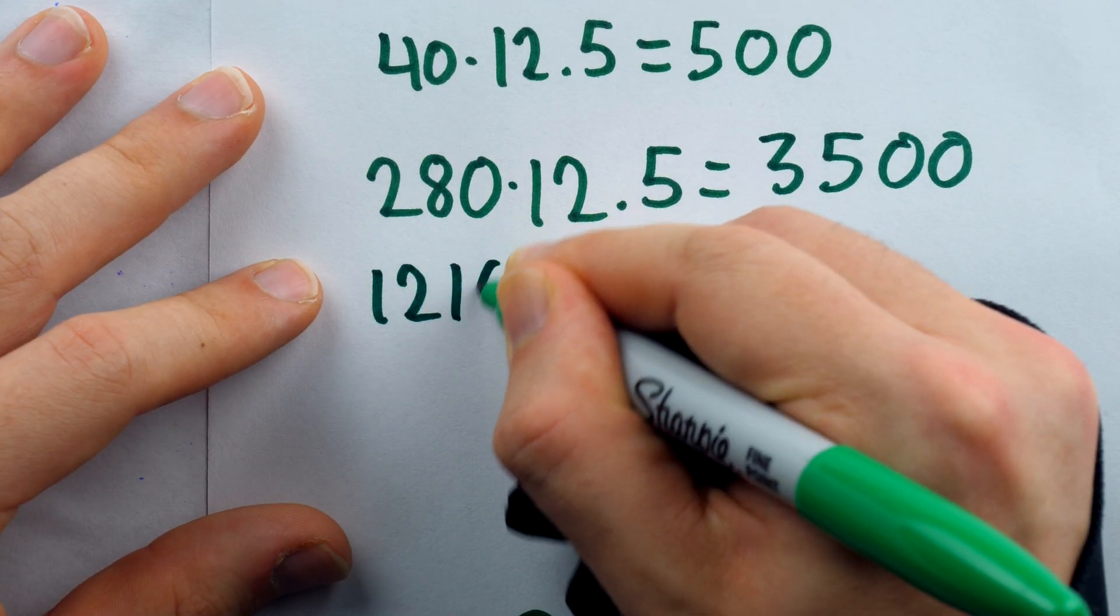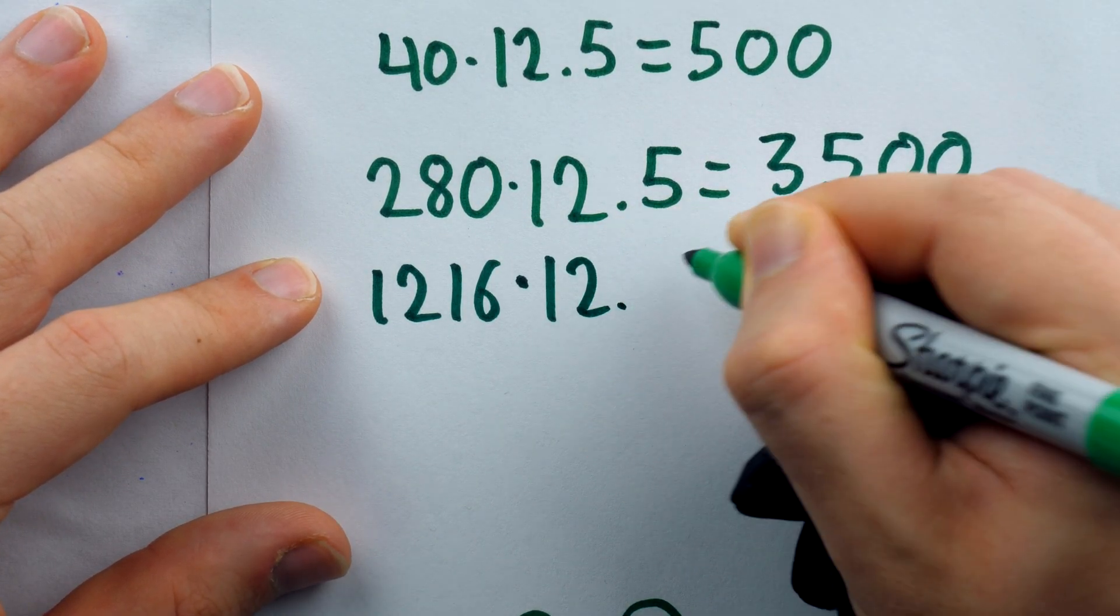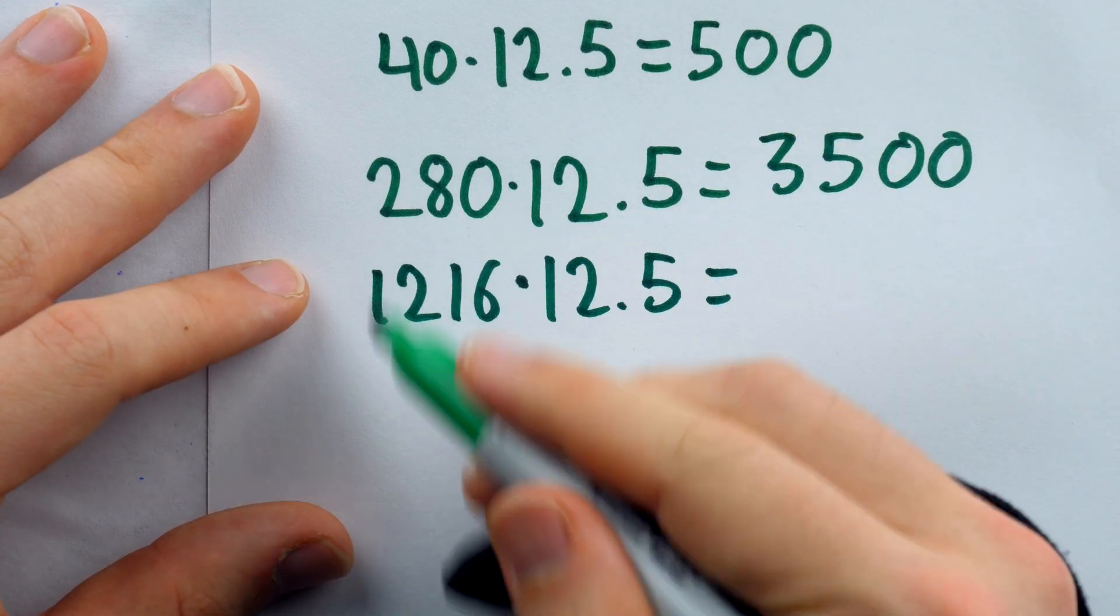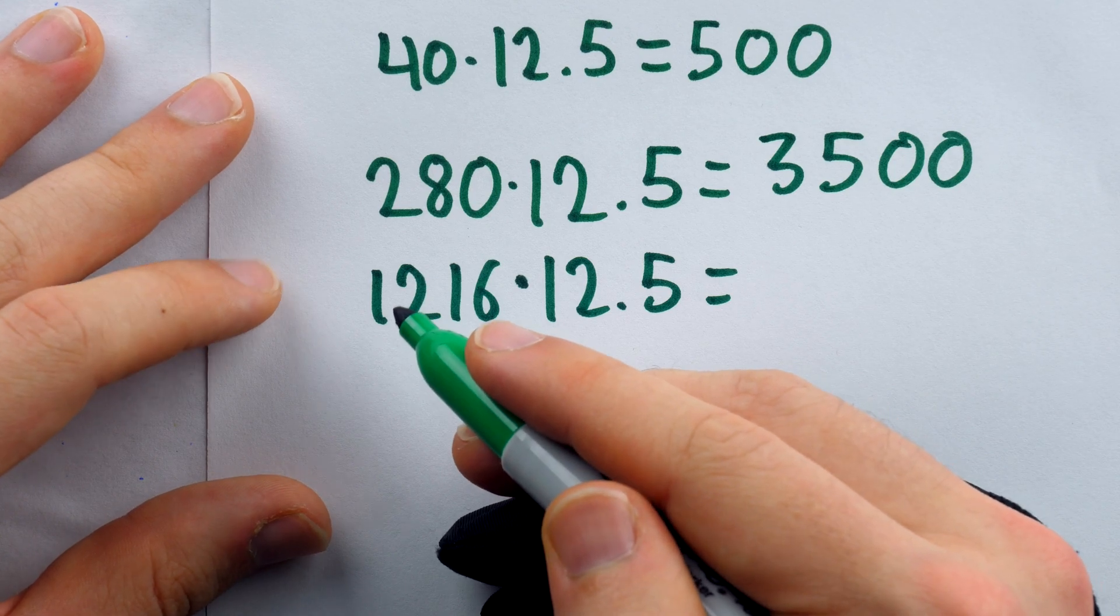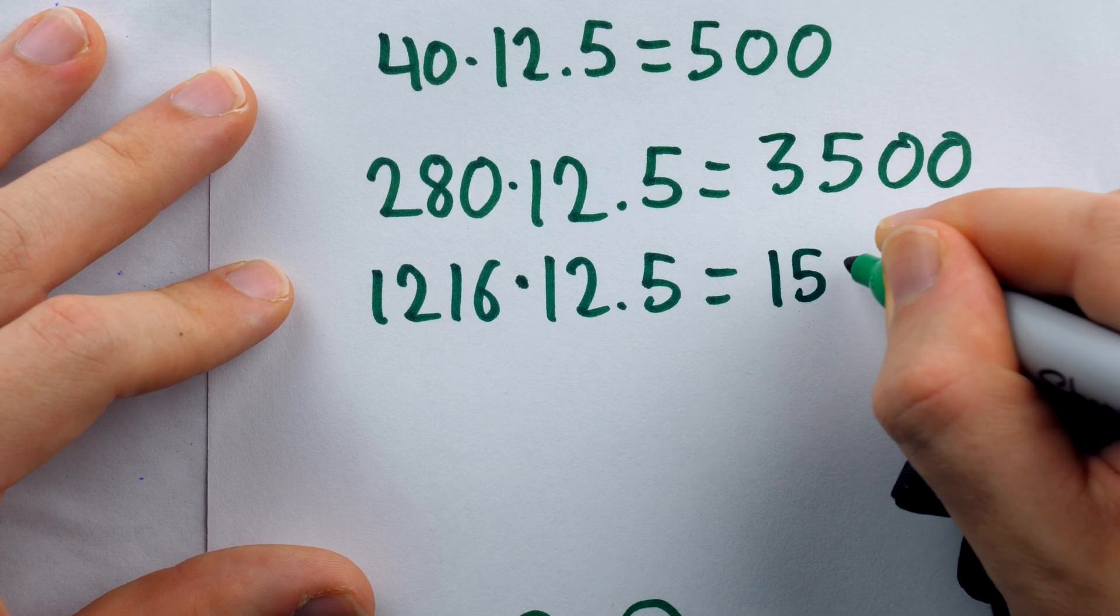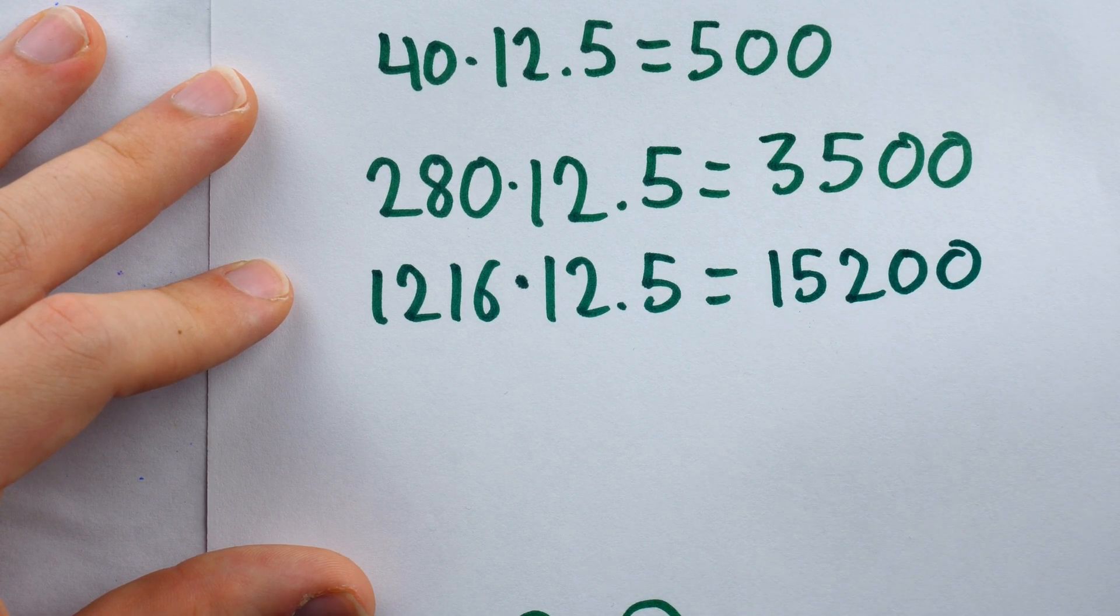And what about 1216 times 12.5? Well, a fourth of 1216 is 304. So add the fourth to this. That gives us 1520. Multiply by 10. And we get 15,200.